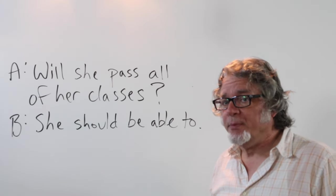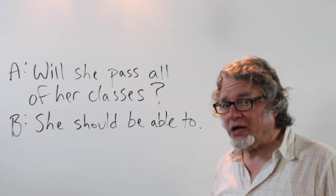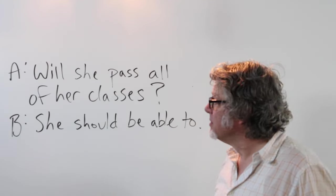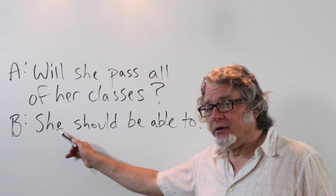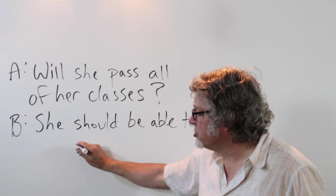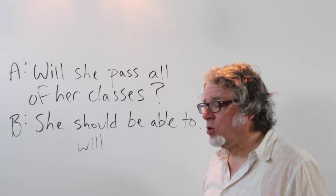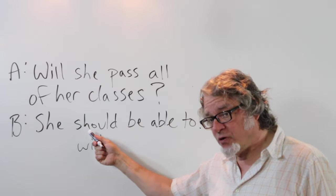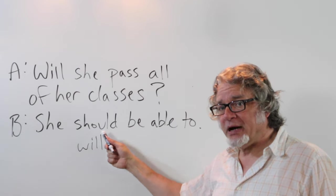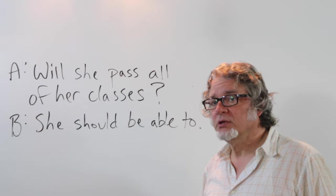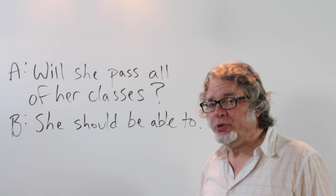You can use 'be able to' in response to a question. Will she pass all of her classes? And the answer here: she should be able to. Instead of saying 'she will' or 'she is going to,' the expectation here is very strong, but there's a possibility perhaps that she won't, but she should be able to.